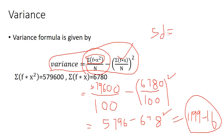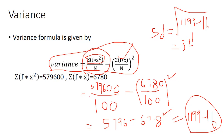If we need the standard deviation, we can just take the square root of the variance. The square root of 1119.16 equals approximately 34.62. This is the standard deviation, and this is the variance for the given data. Thank you for watching.